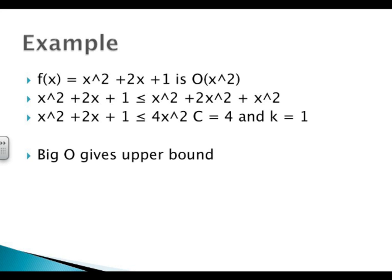...our function 4x squared is going to grow faster than the function x squared plus 2x plus 1. So f of x is Big O of x squared, when we have the witnesses — which is what these constants are called — c equals 4 and k equals 1.